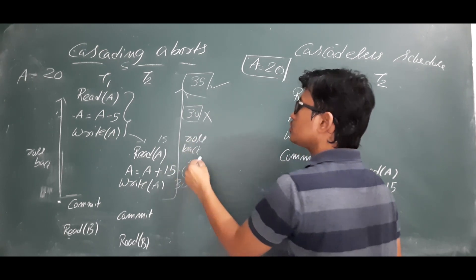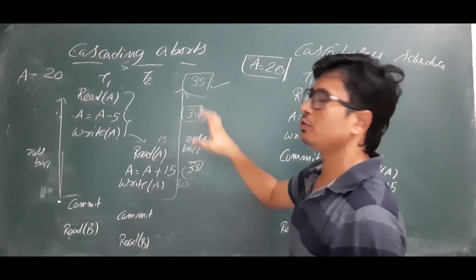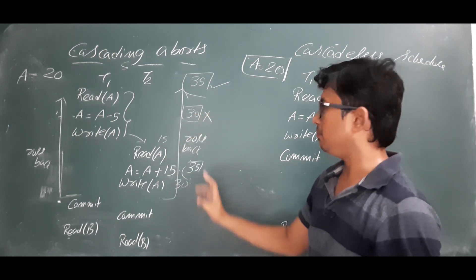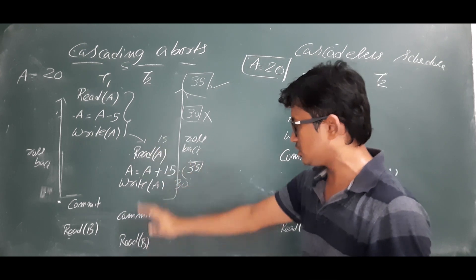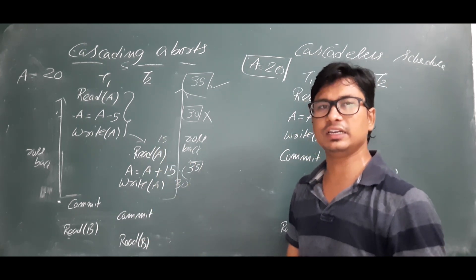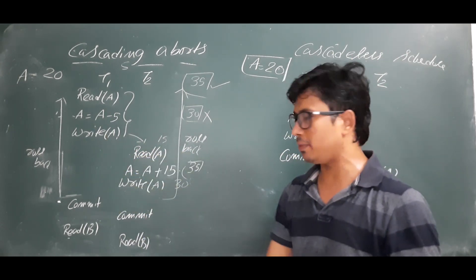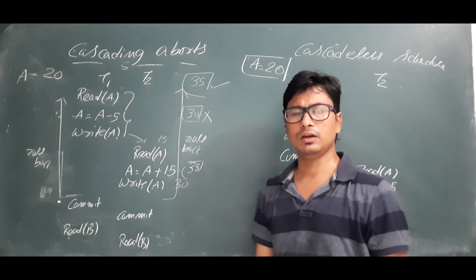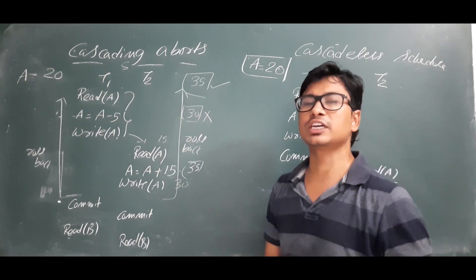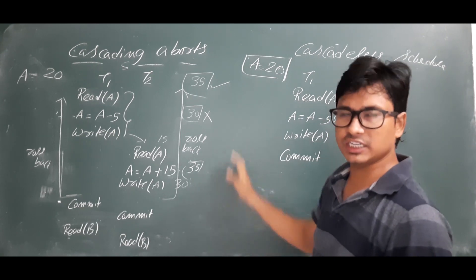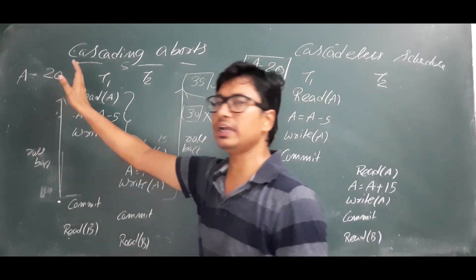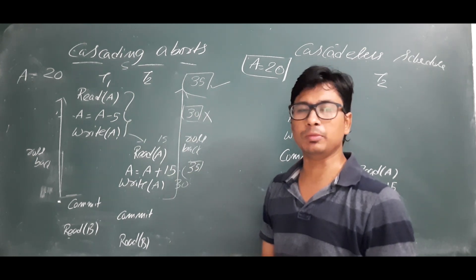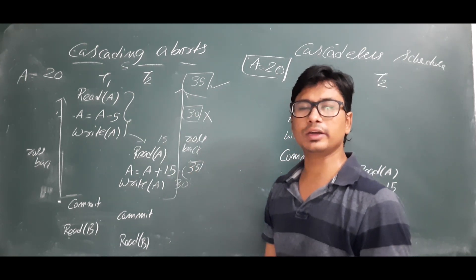Transaction two should abort its operations to avoid mistakes. If it executes all its operations, it will get the value 30, but it should have gotten 35 — giving an incorrect result. So instead of giving incorrect results, transaction two also rolls back. If there are transactions T3, T4, and so on depending on transaction one, all of them should also abort and roll back. That is why it is called the cascading abort problem.